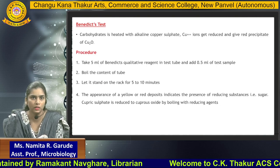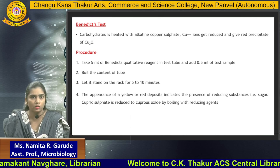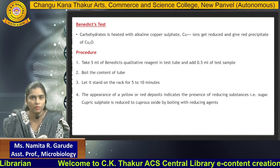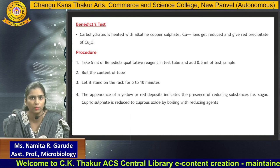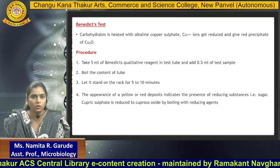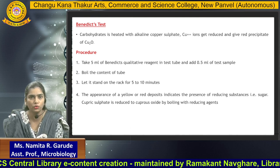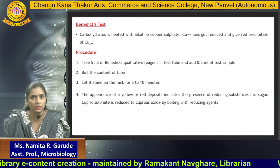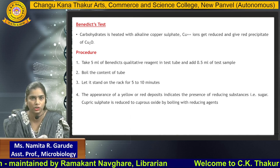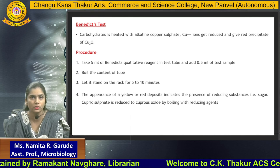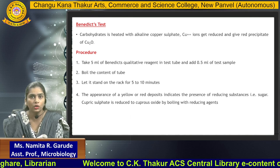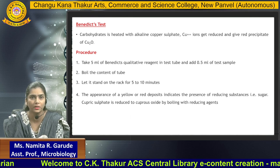Next is Benedict's test. The components of Benedict's reagent are sodium sulfate, sodium carbonate, and pentahydrate copper. In this reaction, cupric ions are reduced to cuprous ions, which are present in Benedict's solution. Under heated alkaline conditions, the carbohydrate is reduced to an enediol compound, and this enediol compound will react with the reduced cuprous ions to give cuprous oxide.